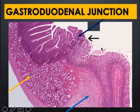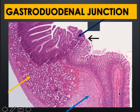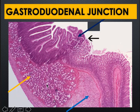This picture shows the pyloroduodenal or gastroduodenal junction. The stomach portion is on one side, and the duodenal portion is identified by its finger-like projections of intestinal villi. The yellow arrow structure points to Brunner's gland in the submucosa of the duodenum.